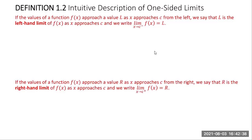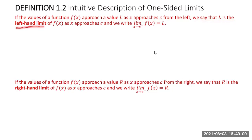Next we have the definition of one-sided limits. We have two definitions: left-hand limit and right-hand limit. The left-hand limit definition says: if the values of a function f(x) approach a value L as x approaches c from the left, we say that L is the left-hand limit of f(x) as x approaches c, and we write: limit as x approaches c from the left (using a minus sign) of f(x) equals L.